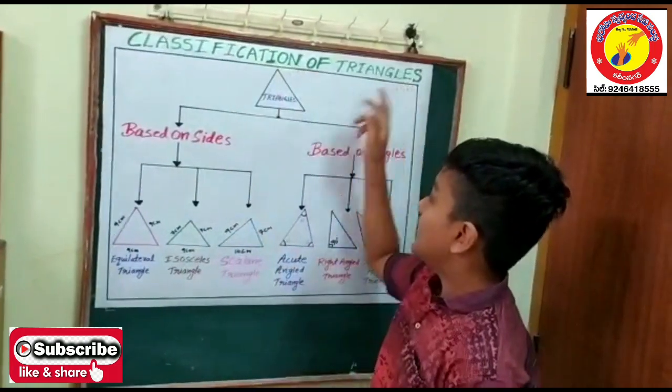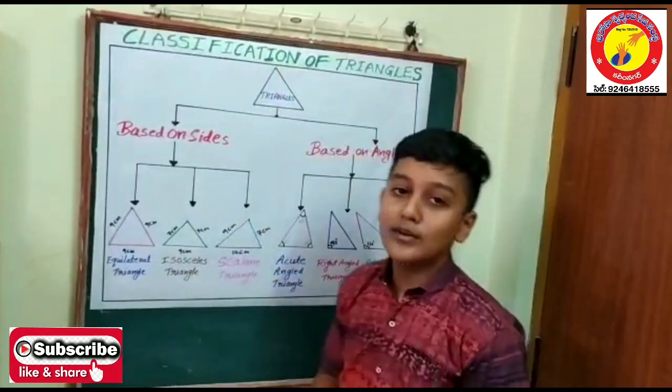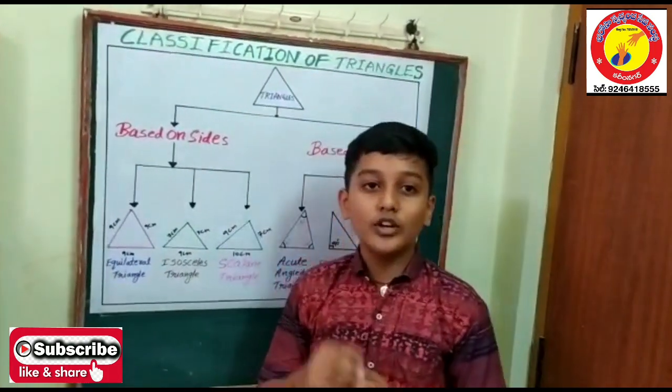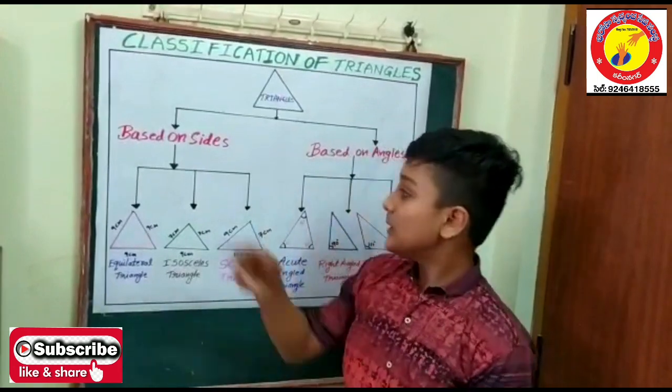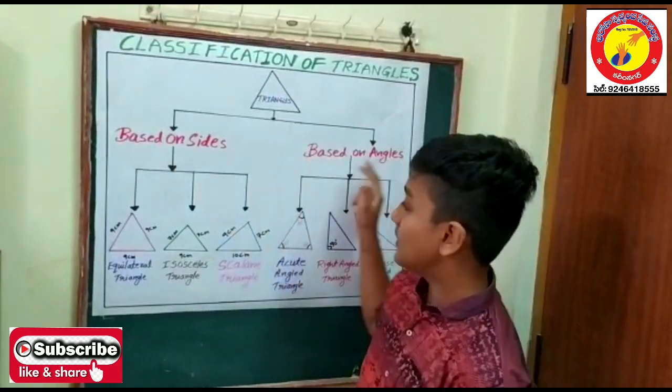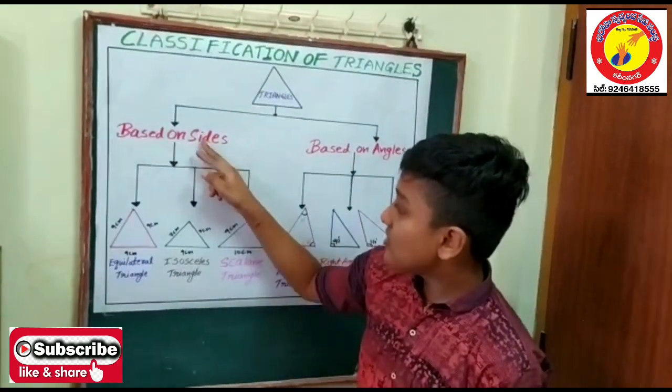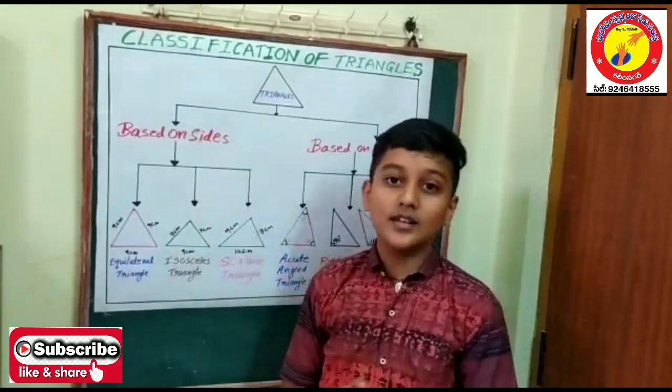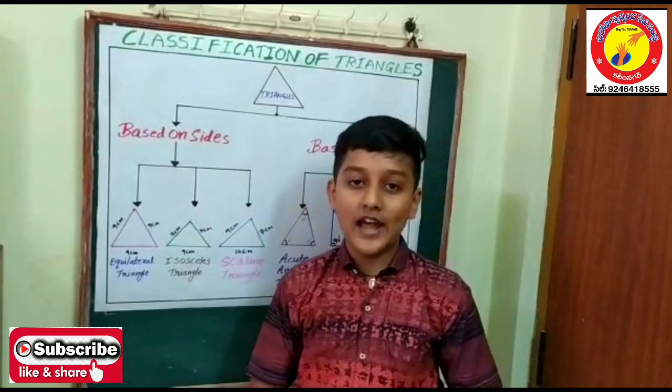Classification of triangles. Triangles are of two types: based on sides and based on angles. Based on sides, there are three types of triangles.